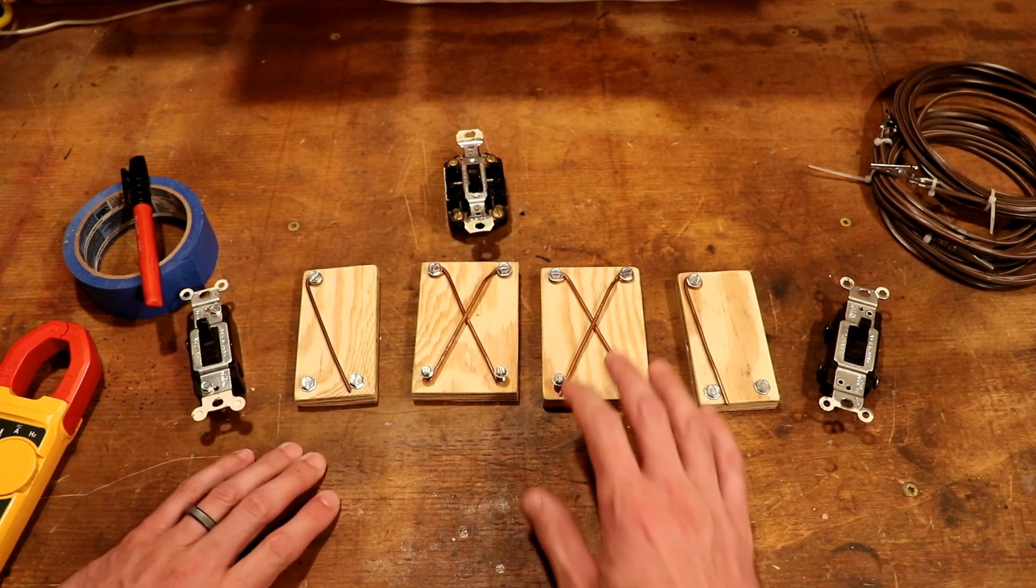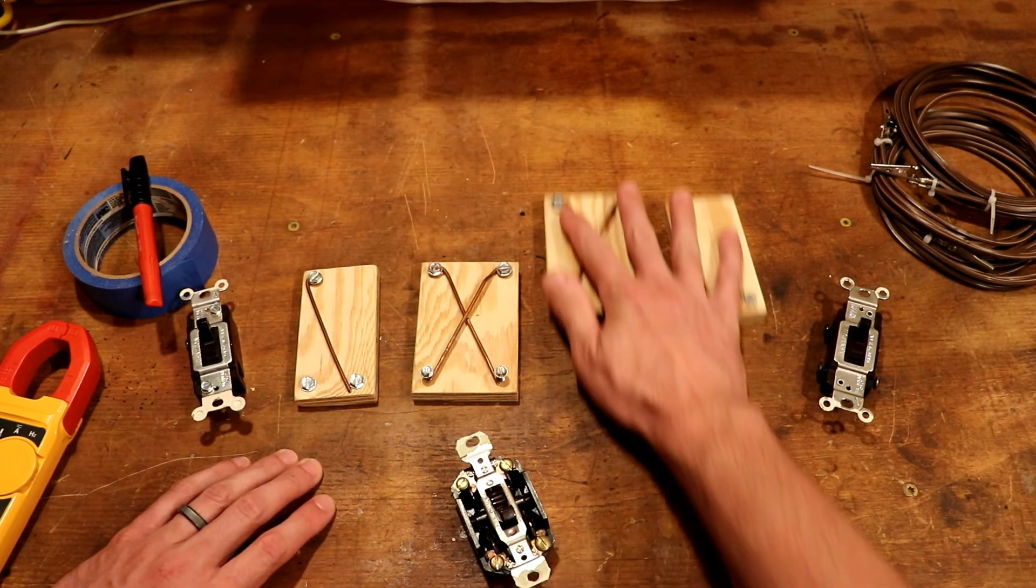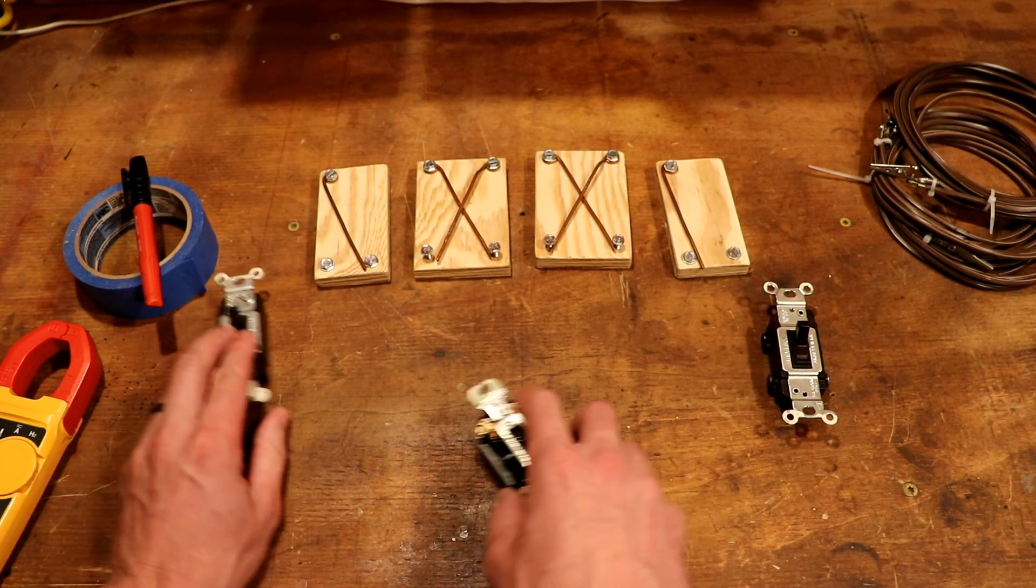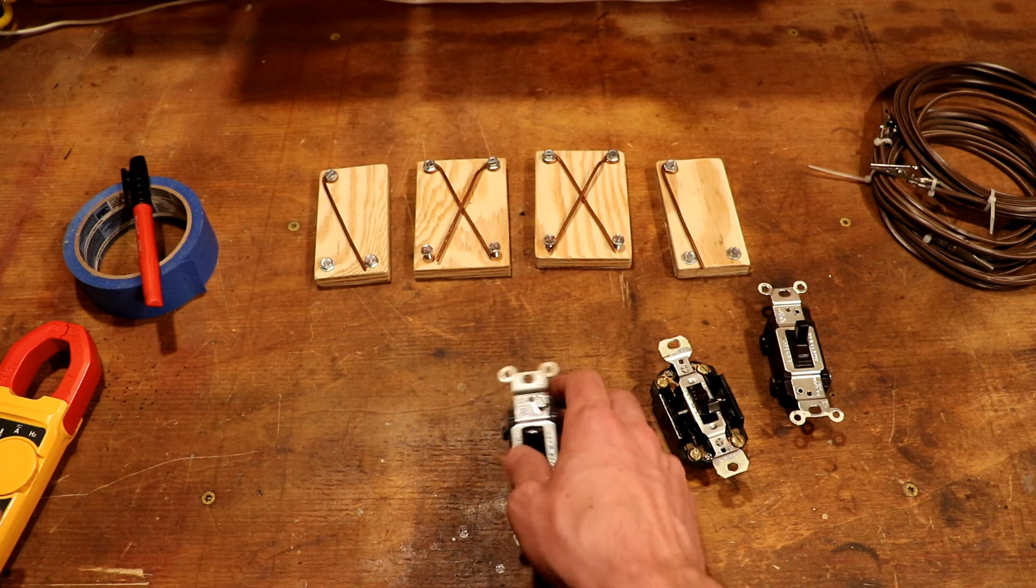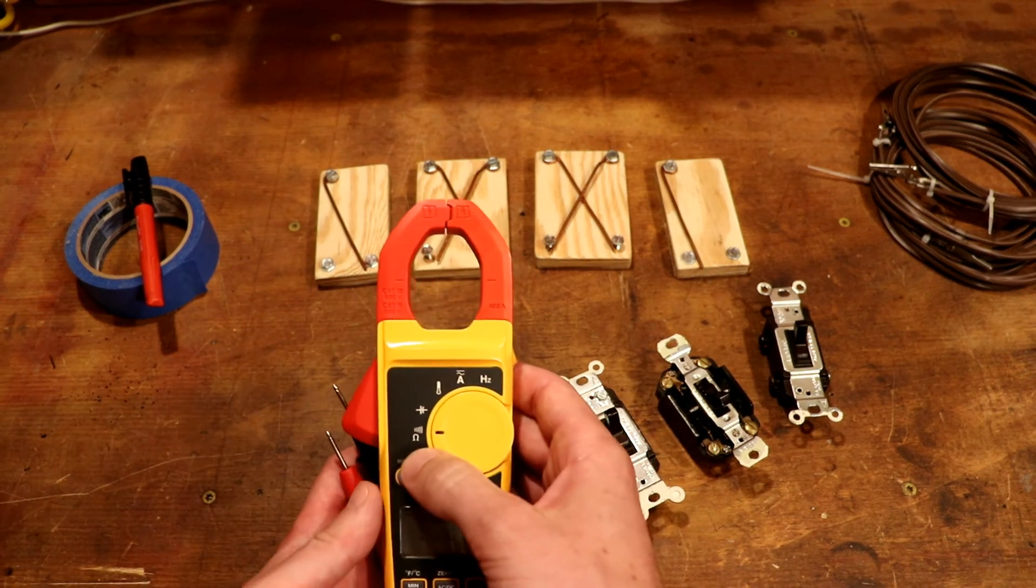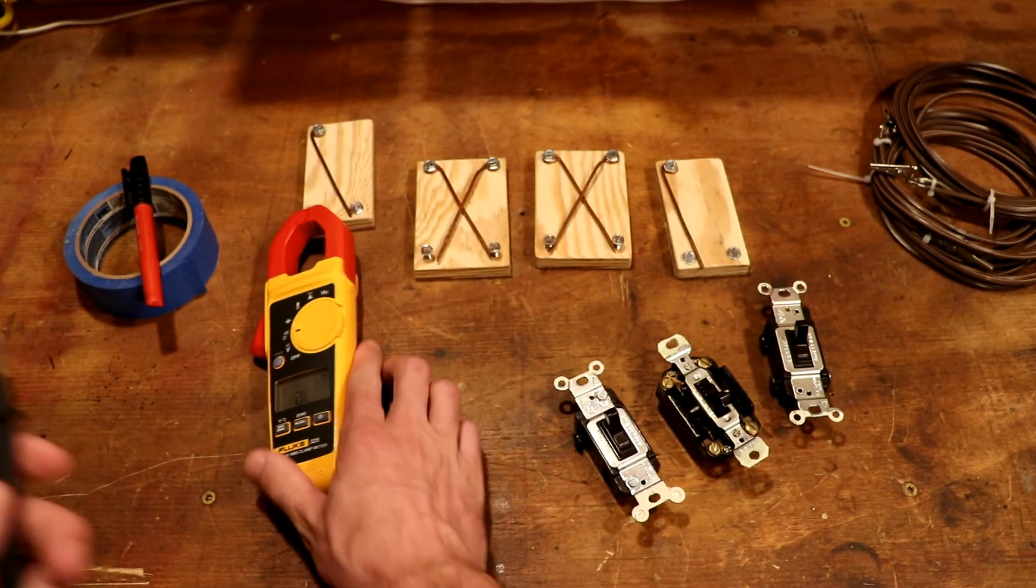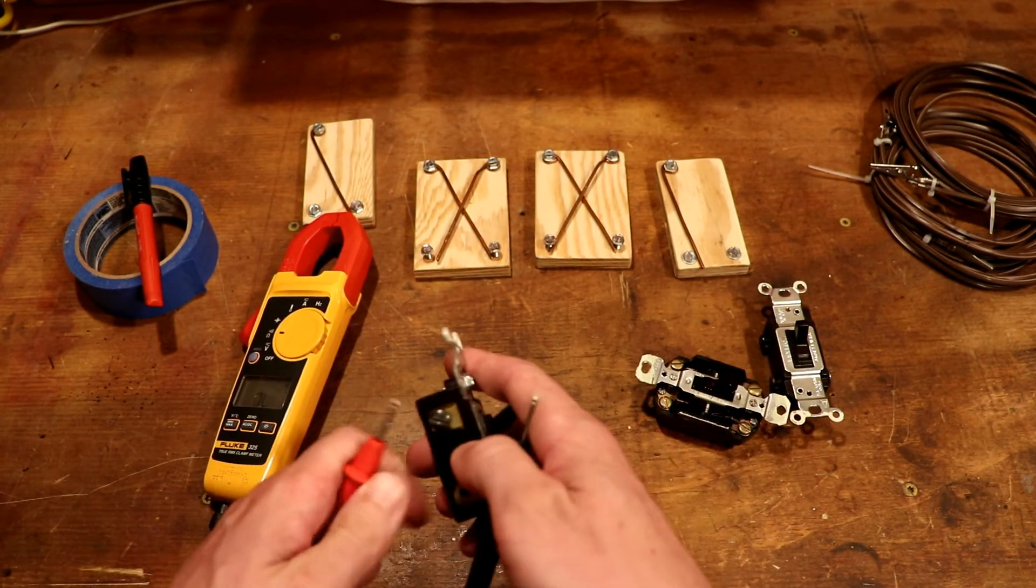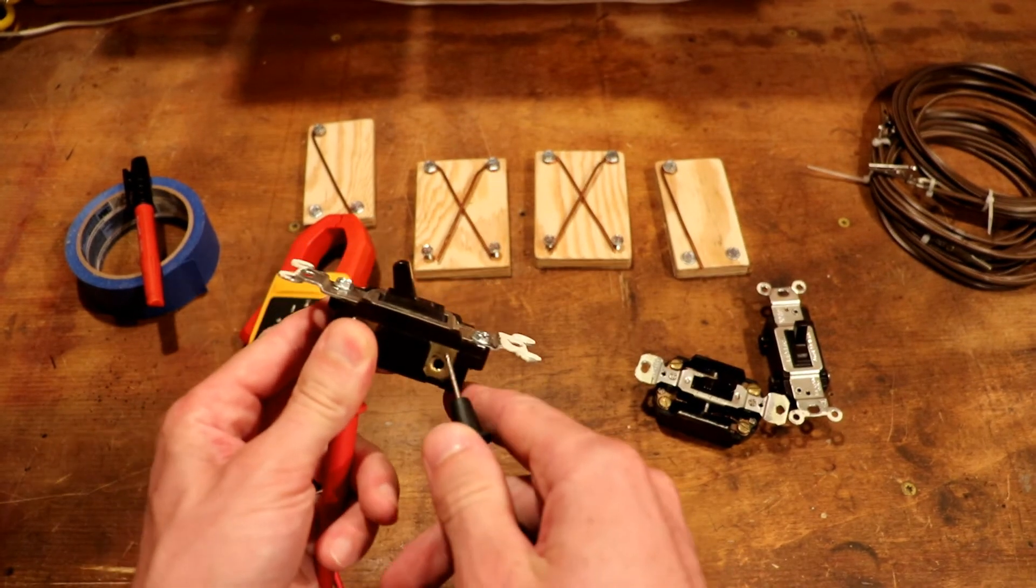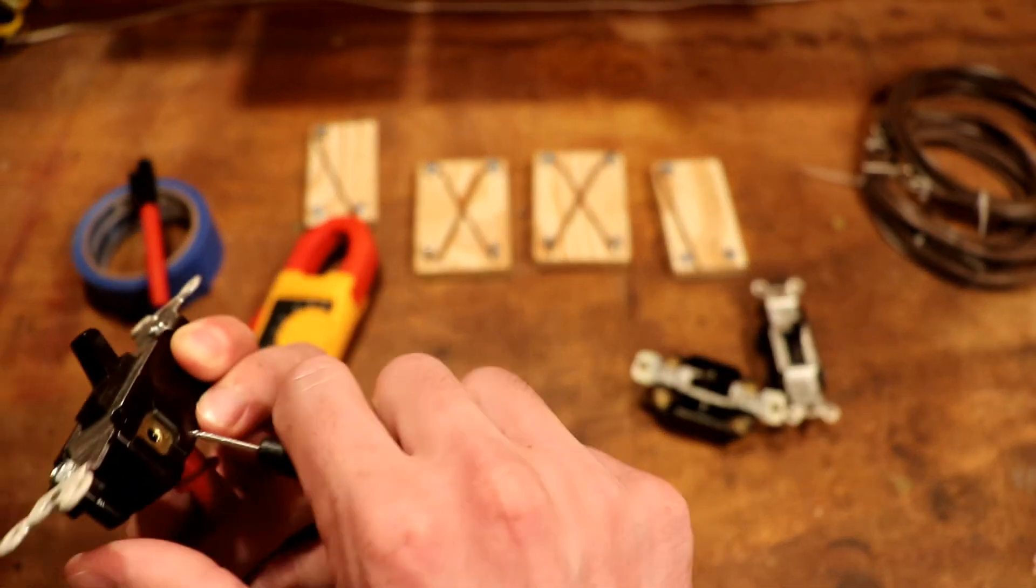A couple of things to keep in mind when you're working with three and four-way circuits or really any light switches, you can use your multimeter to confirm that the switches themselves work. To do that, you just set it to that beeper setting, that ohms setting that we already talked about. And then hold one lead on that common lug and then test against one of the other lugs.